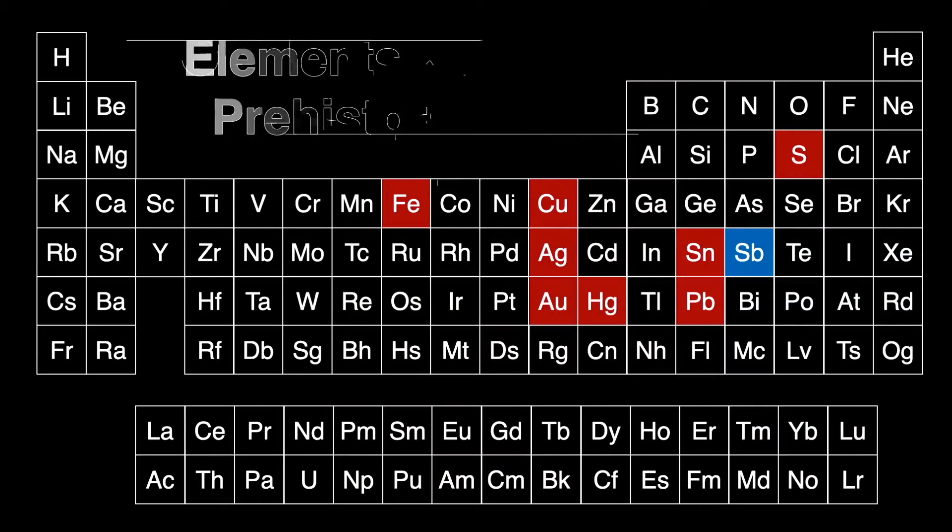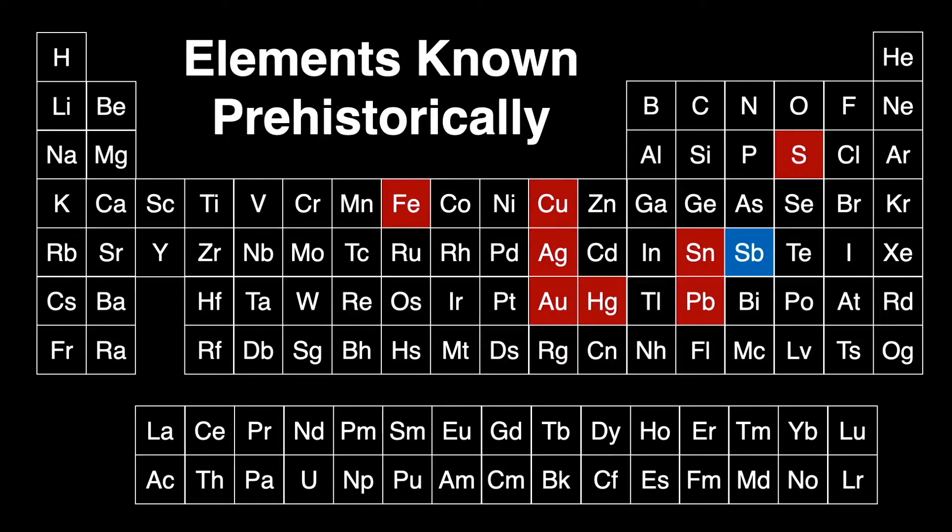There are about nine elements discovered before written records. Here you see which ones: sulfur, iron, copper, silver, tin, antimony, gold, mercury, and lead. These elements were discovered so early because most of them occur in nature in their native state.